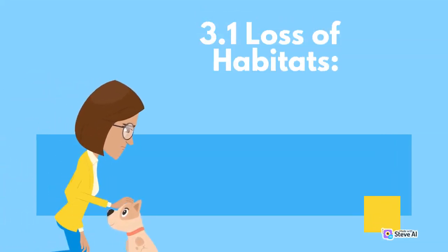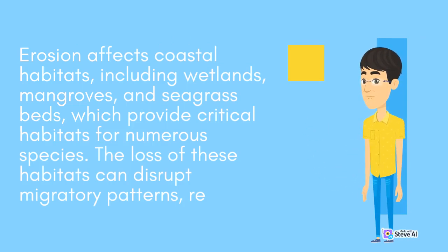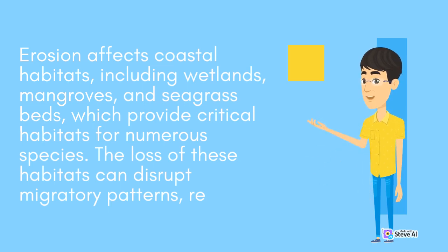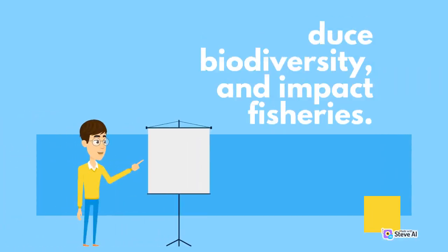3.1 Loss of Habitats. Erosion affects coastal habitats, including wetlands, mangroves, and seagrass beds, which provide critical habitats for numerous species. The loss of these habitats can disrupt migratory patterns, reduce biodiversity, and negatively impact fisheries.